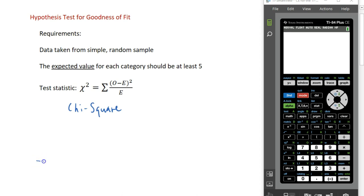The chi-square distribution looks different from the normal distribution and the student t distribution in that it's not a symmetric distribution. It's actually a right skewed distribution, and the test statistic tells us where we fall along this distribution.